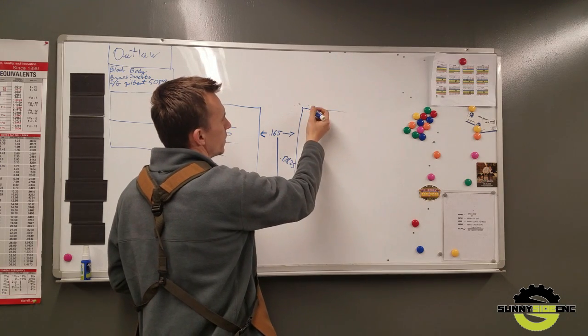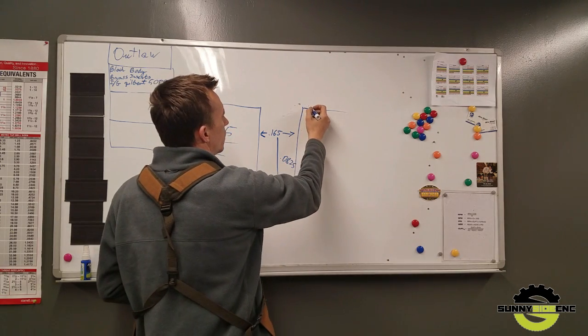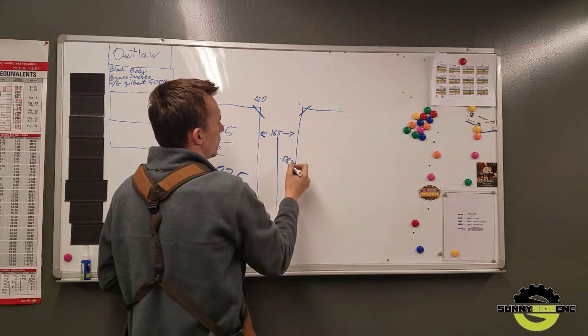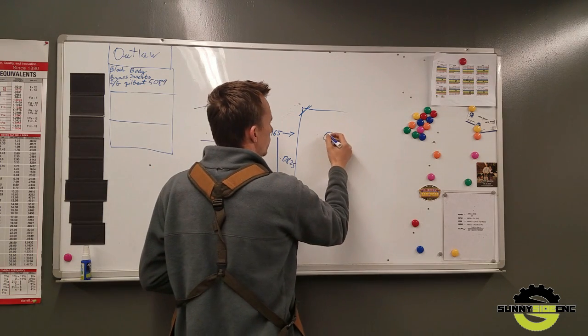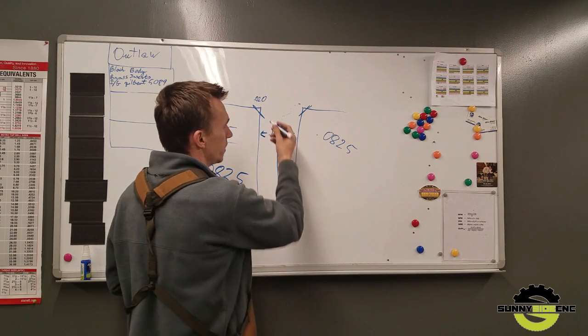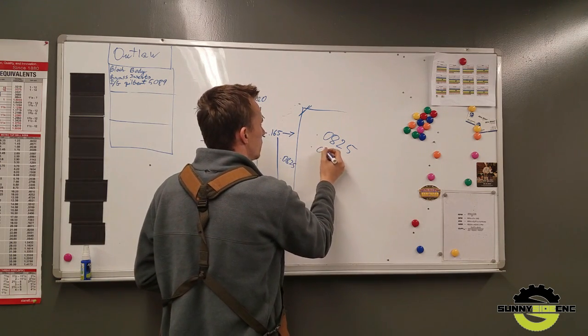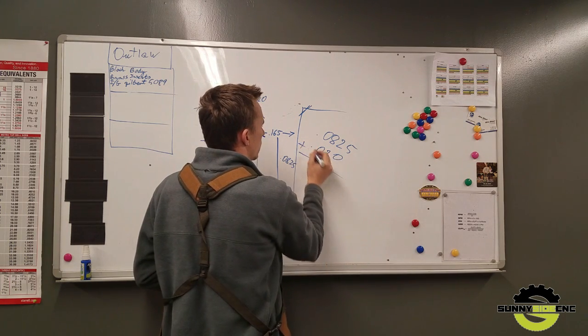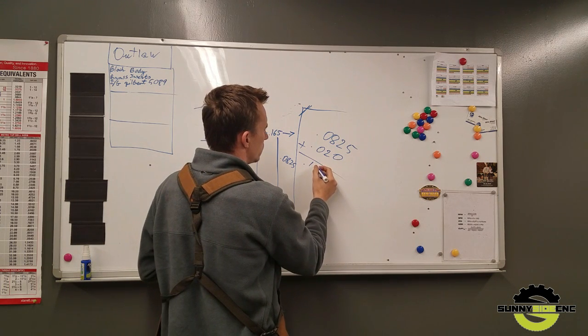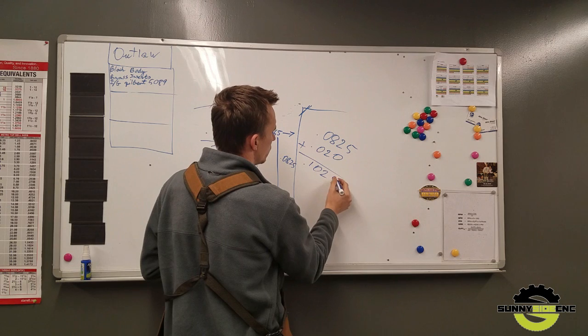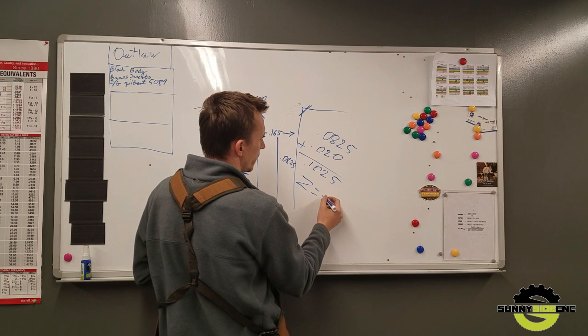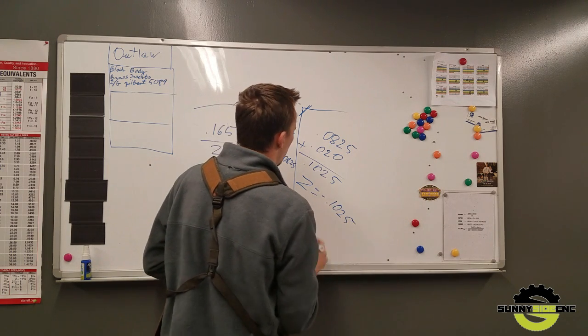Let's say you want to bring that corner, you want a chamfer of 20 thousandths. You just gotta take the radius of the hole plus 20 thousandths, so it will end up with 0.1025.